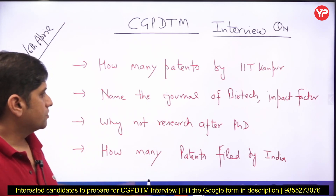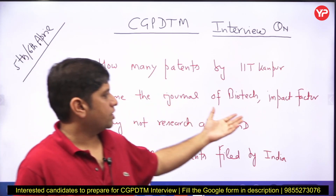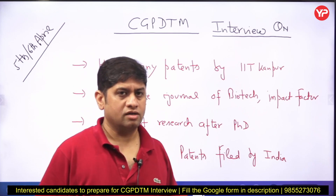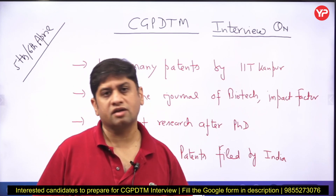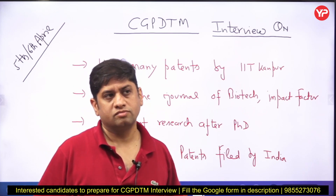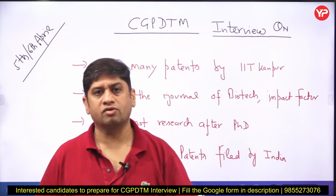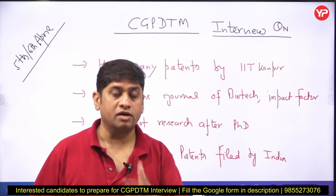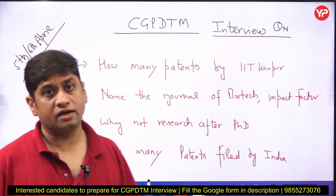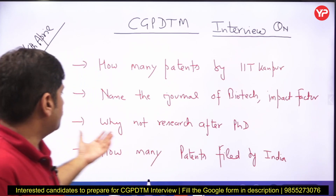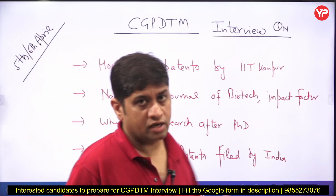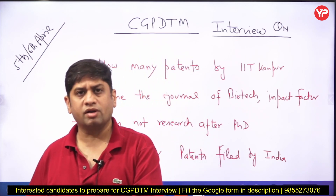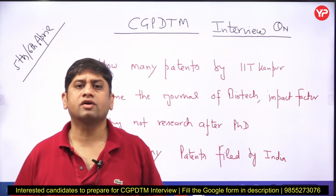If you are doing biotechnology, can you name some reputed international journals in biotechnology — like Nature Biotechnology? What is its impact factor: 10, 20, 50? And if you have done a PhD, why not continue research? If you join as an Examiner of Patents and Designs or go into teaching, you can still do research in your department.